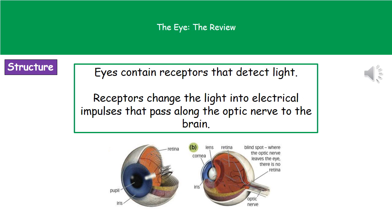Welcome to our review on the eye. The first thing we need to understand is the structure of the eye and the key parts involved. Our eyes are used to detect light and therefore allow us to see what's around us. Inside the eye we have receptors that are used to detect the light.